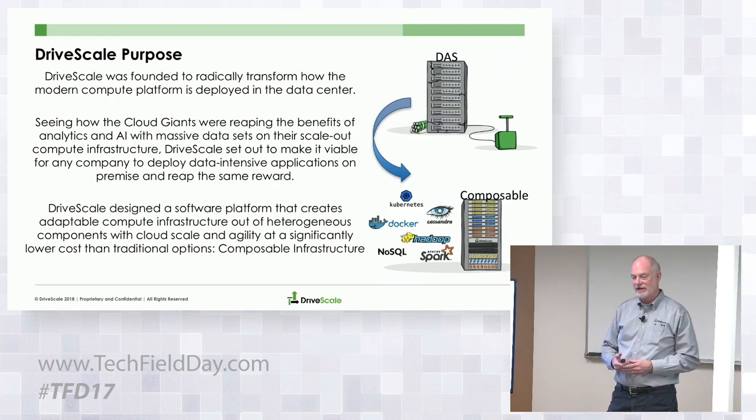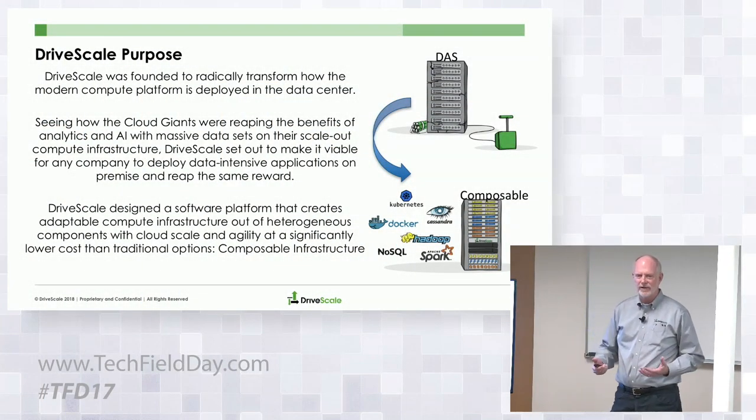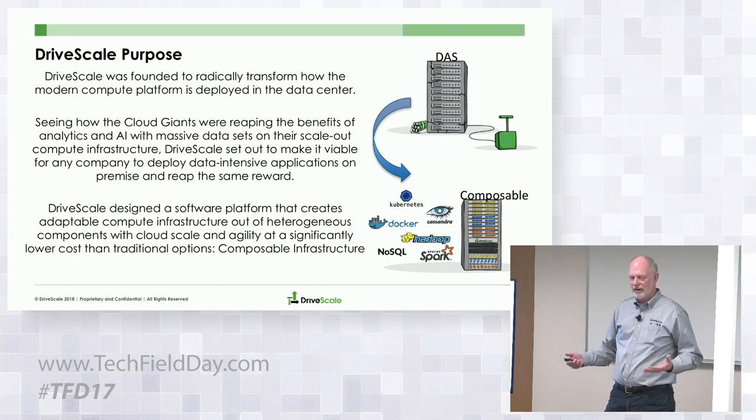That approach was successful, but there was quite a bit of inefficiency and many constraints — it actually slowed down deployment of this kind of computing because it was pretty hard. Our founders Tom and Satya saw a way of using disaggregation and composability to make hyperscale-style computing more accessible, easier, and more efficient at the enterprise scale. We replaced those DAS data centers with composable infrastructure, constructing the compute platform from commodity components.